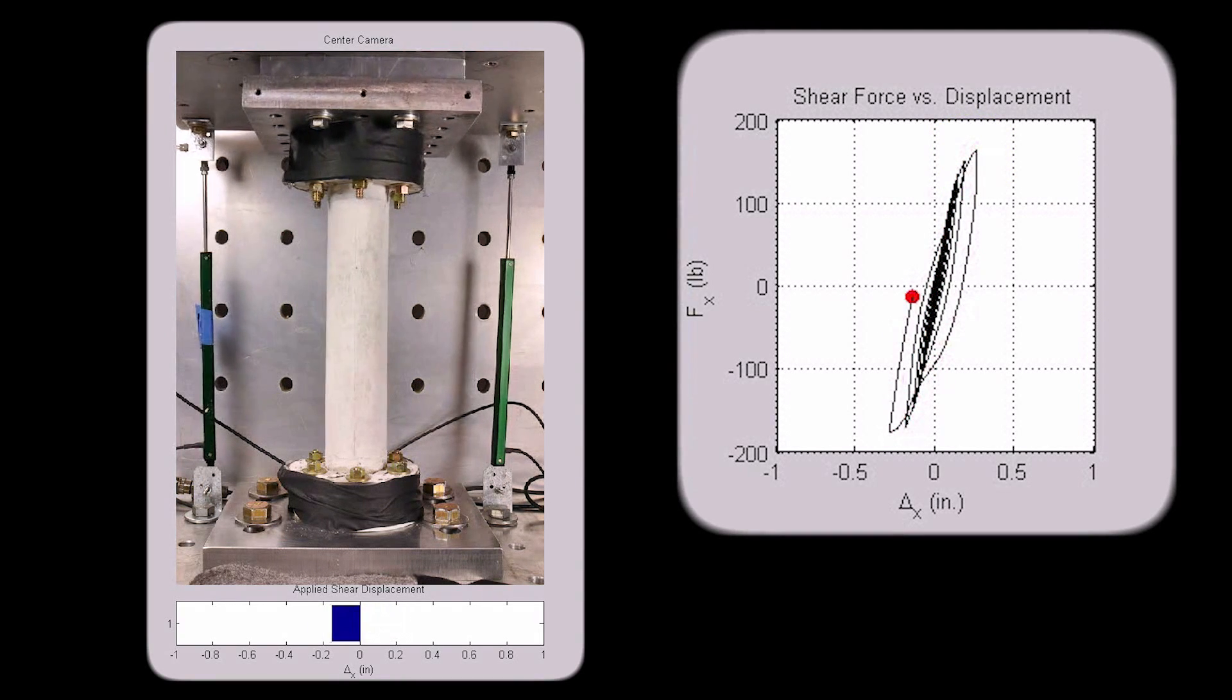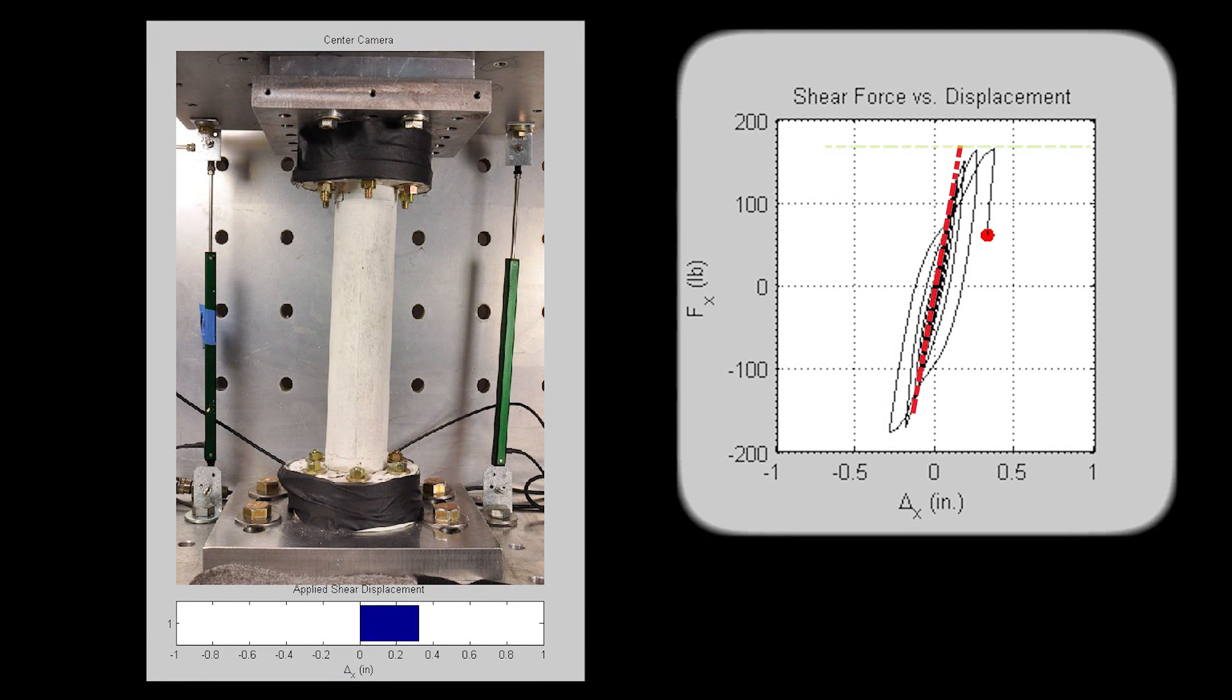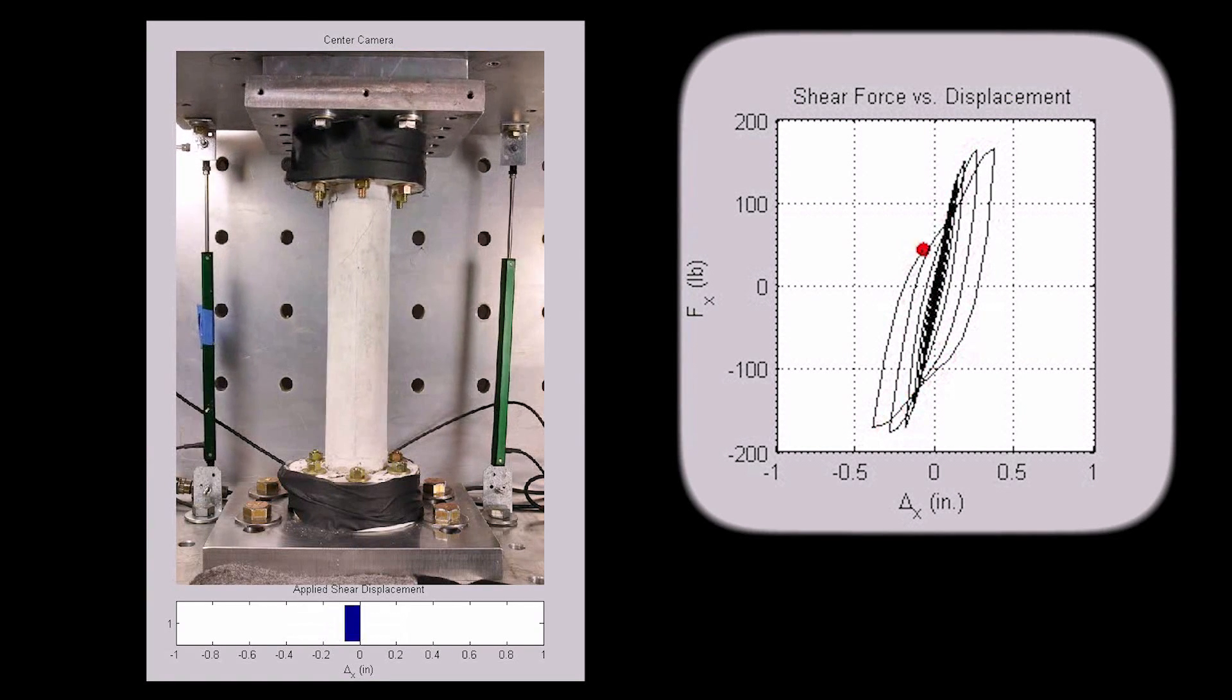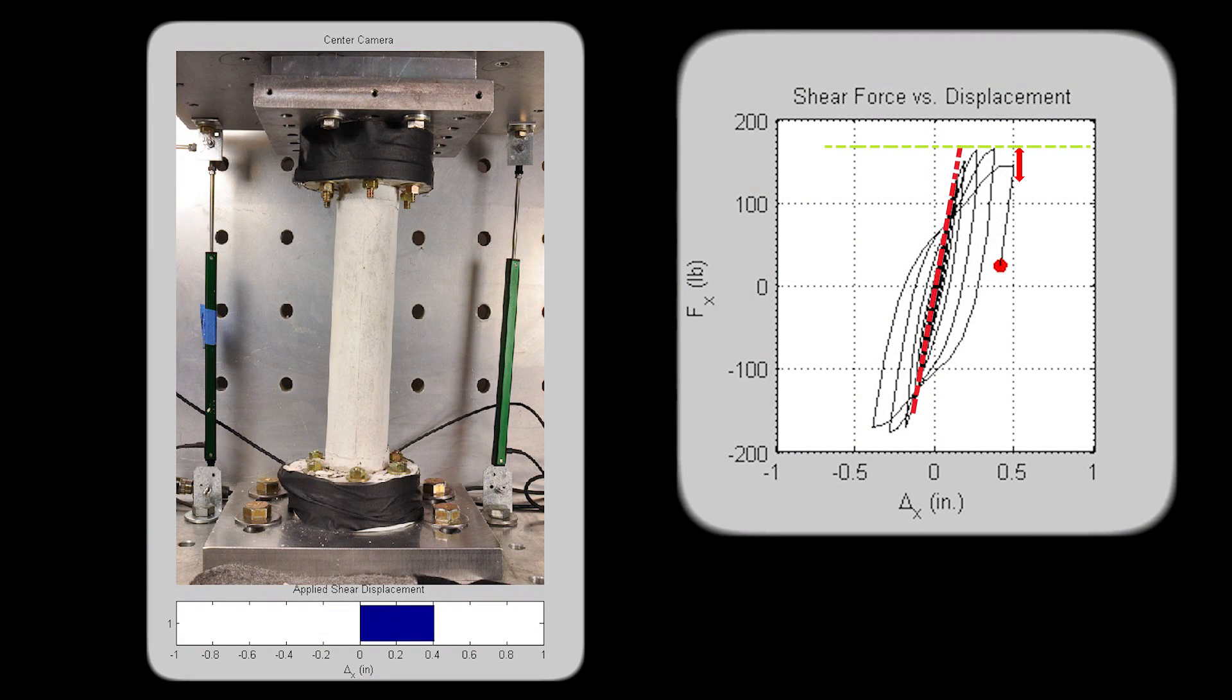Shortly afterwards, the reinforcing steel begins to yield, as illustrated in the reduced stiffness of the response, and finally in the reduction of measured force values that are associated with increasing applied displacements.